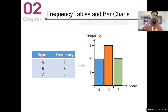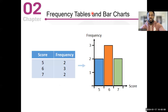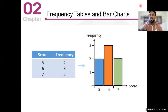Here's an example of a frequency table. On the left you have scores — score five, score six, and score seven. On the second column you have your frequency counts. Two people scored five, three people scored six, and two people scored seven. Those things are going to be really important as you move forward, just to know how to read those.